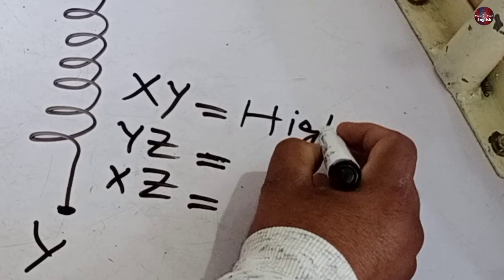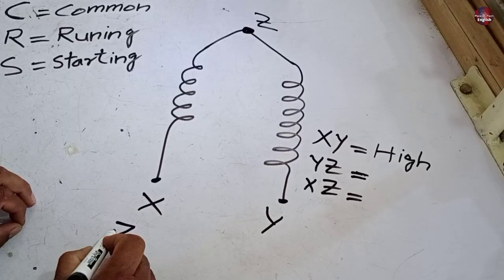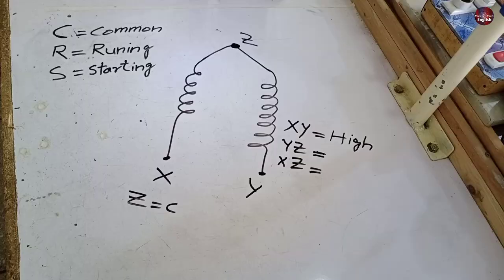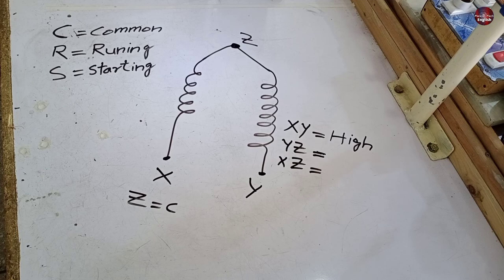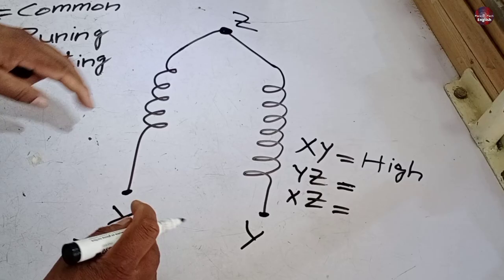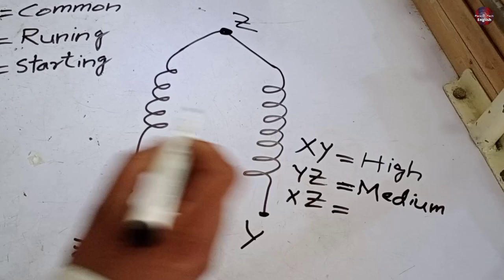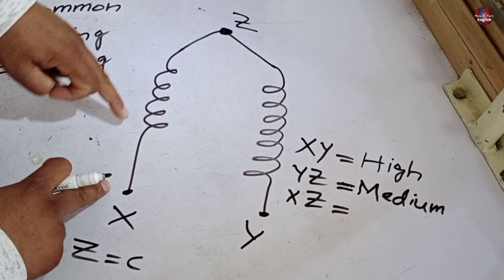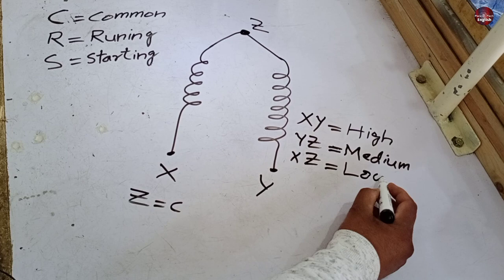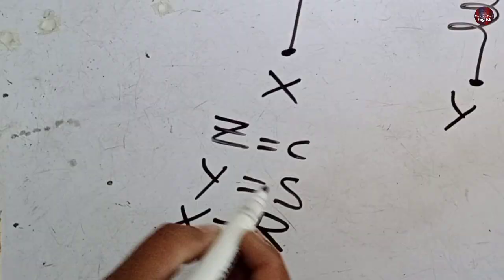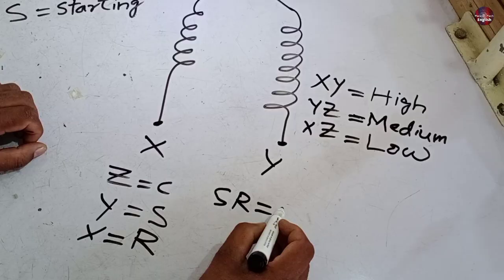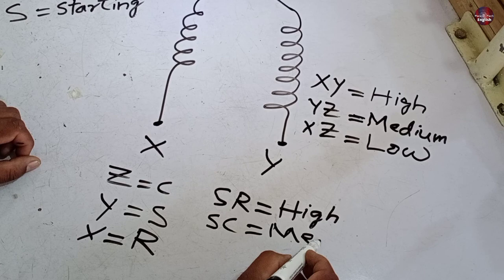Now we have a problem: whether the running winding is installed between Y and Z or the start winding is installed between X and Z. So for that, now I will suppose that Z and Y are the start winding. Always remember that the resistance reading between the starting and common will be medium value. So I am writing medium on the Y and Z. The running coil of the compressor is the X and Z, and the running and the common terminal always have the lowest resistance values. According to what I have supposed here, the Y is the start point and the X is the run point. This means the resistance value between the start and run is high, the start and common will have the medium resistance value, the run and the common have the lowest resistance values. Always remember this formula.